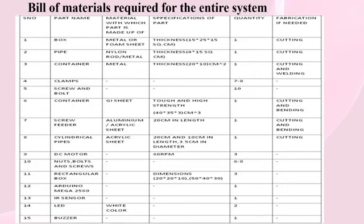Bill of materials: box, pipe, container, clamp, screw and bolt, screw feeder, cylindrical pipes, DC motors, nuts, bolts and screws, rectangular box, Arduino Mega, IR sensors and LEDs. These are used with the specific specifications required for our system.